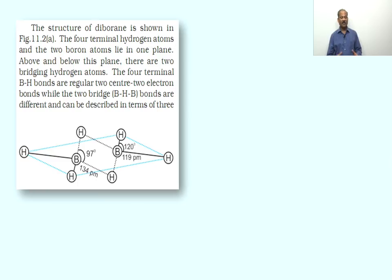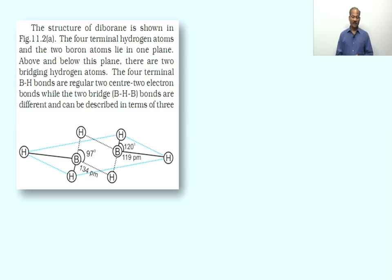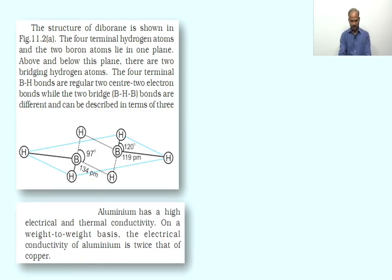The structure of diborane is an important topic for exam questions. There are four terminal hydrogen atoms and two Boron atoms lying in one plane, with two bridging hydrogen atoms above and below this plane. The four terminal B–H bonds are regular two-centre two-electron bonds, while the two bridging B–H–B bonds are three-centre two-electron bonds, also called banana bonds or electron-deficient bonds.